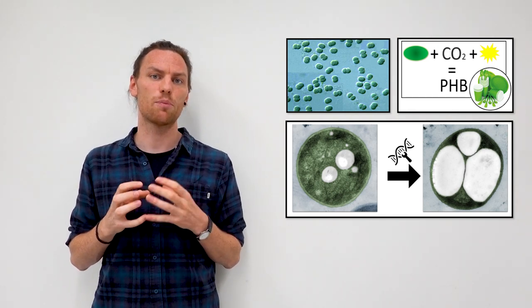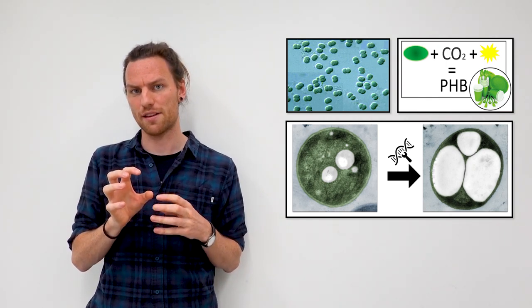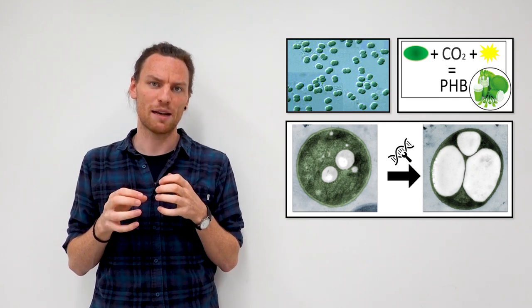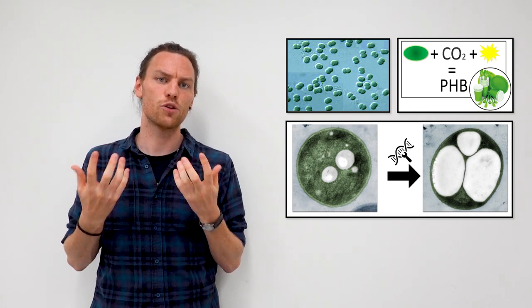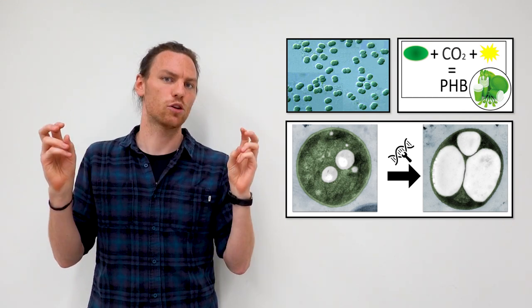The first one is that they're able to grow with the help of photosynthesis, meaning they can use the energy provided by the sun to actively sequester CO2 from the atmosphere and incorporate it into their metabolism. That's why they're also sometimes referred to as microalgae.